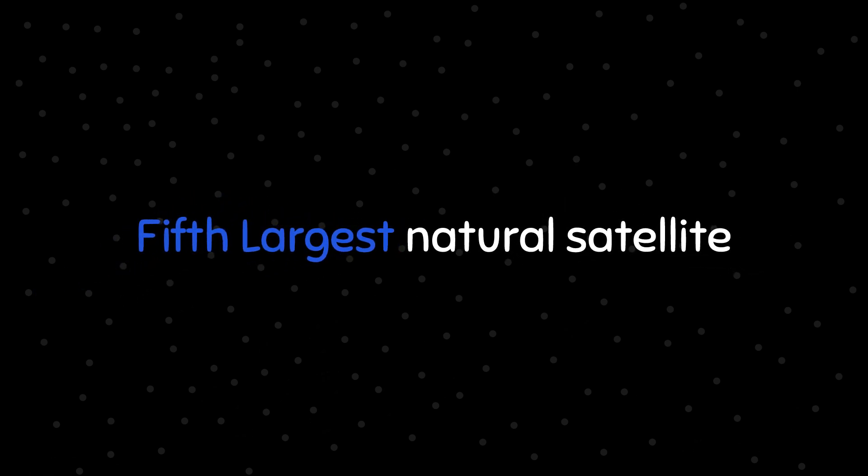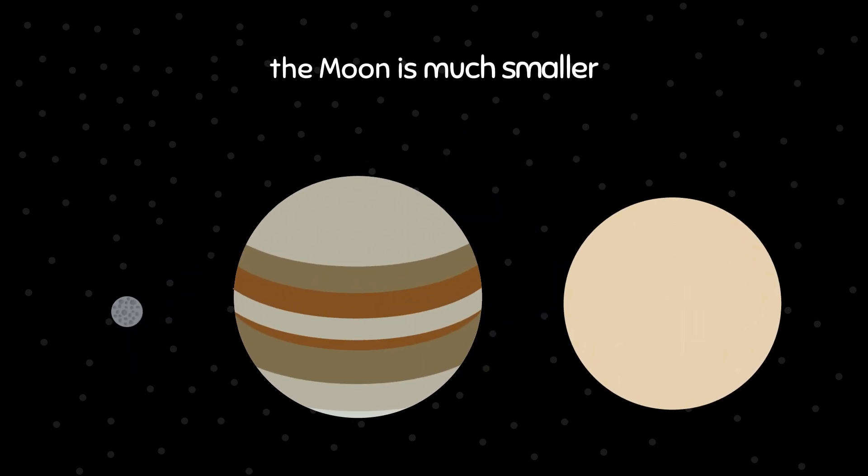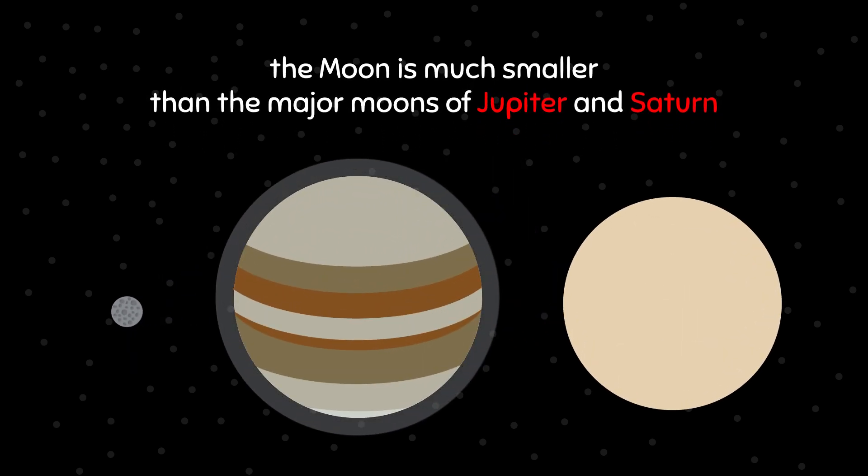Fifth largest natural satellite in the solar system. With its diameter of 3,475 km, the Moon is much smaller than the major moons of Jupiter and Saturn.